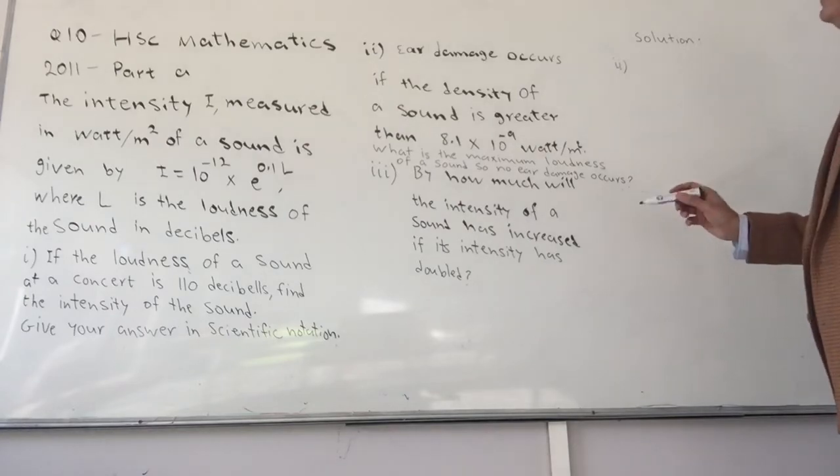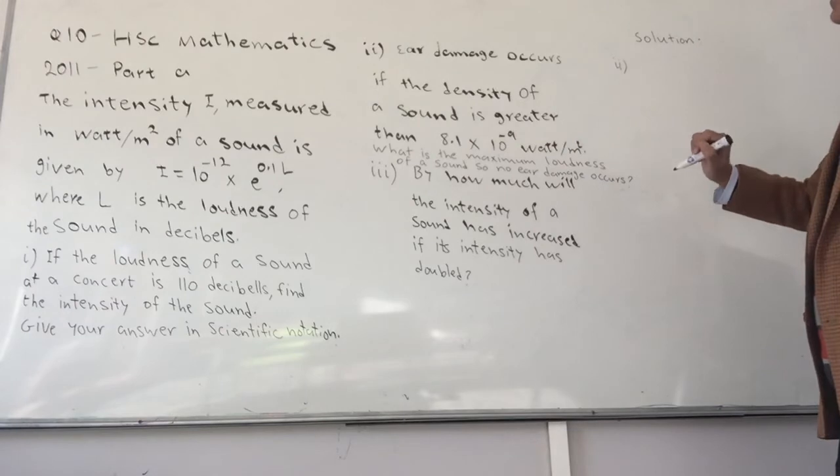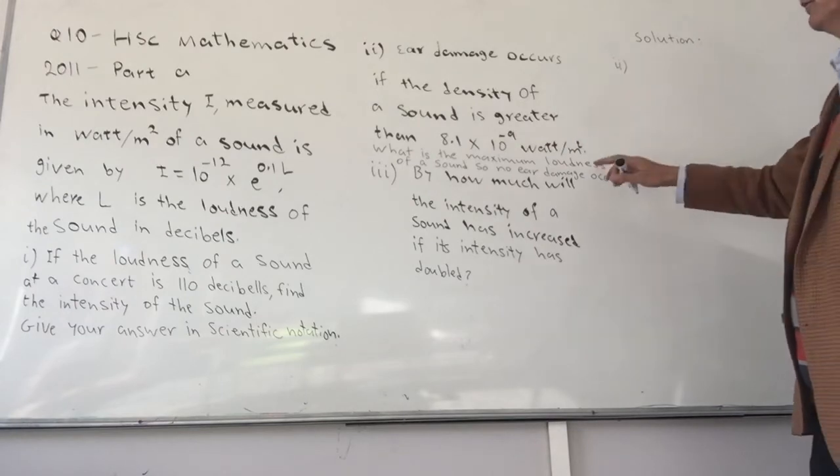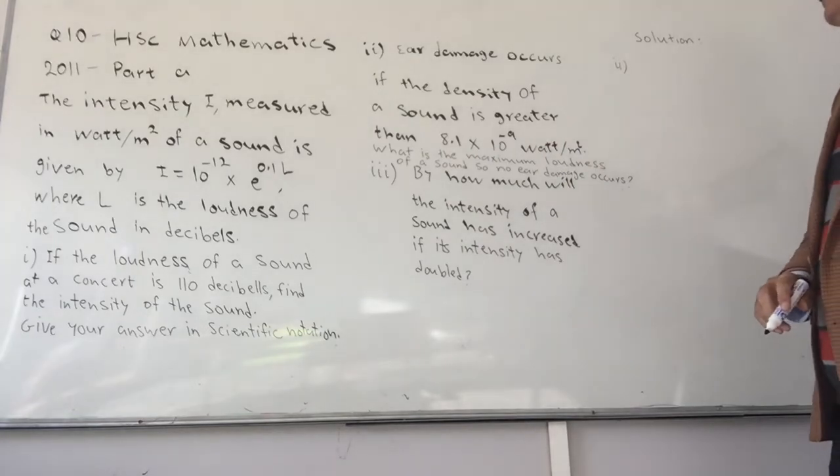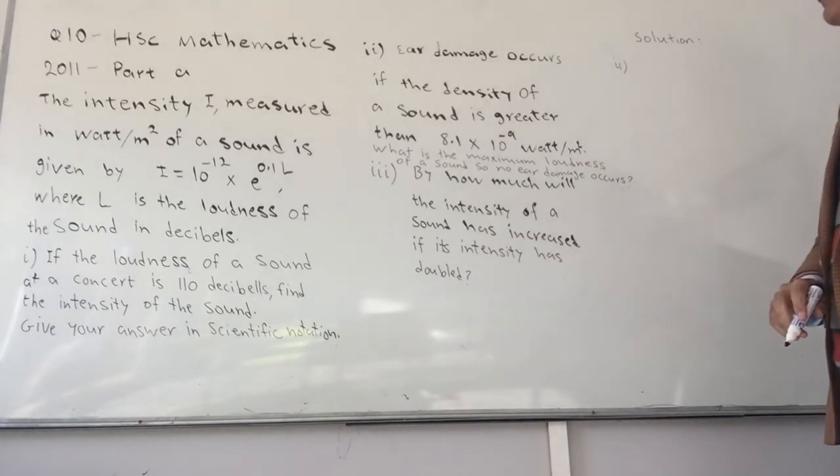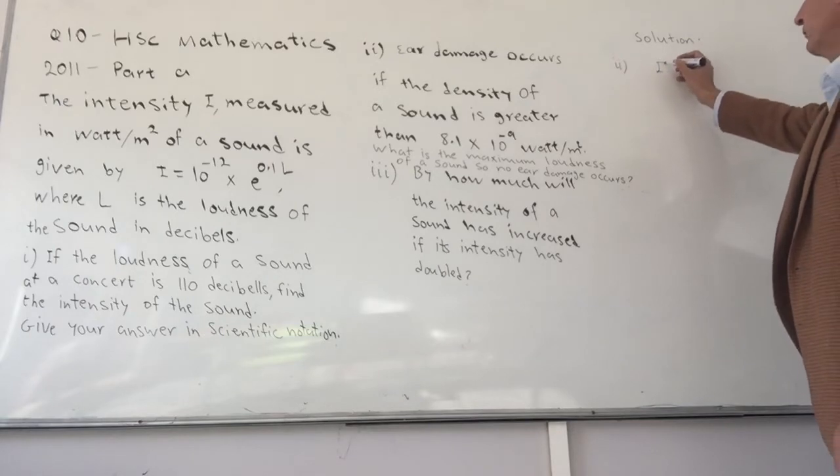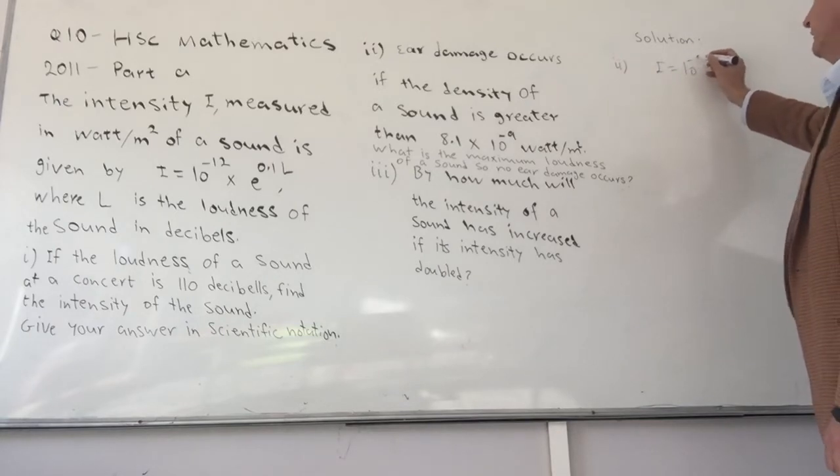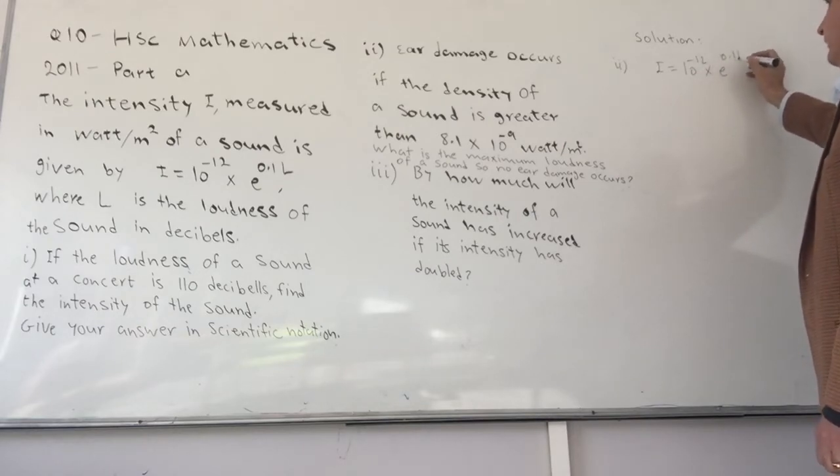So basically here again is a matter of substitution, but this time around we are substituting for I itself. So I write the formula they have given us again: I equals 10 to the minus 12 times e to the power of 0.1L.